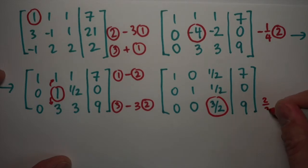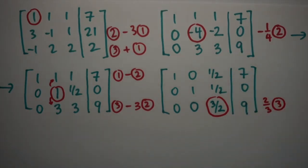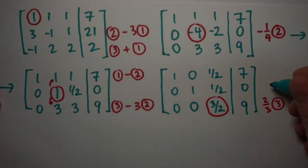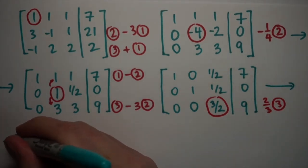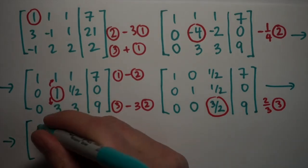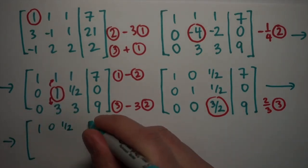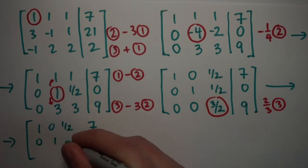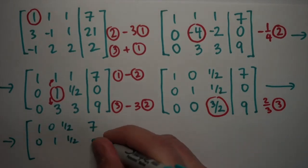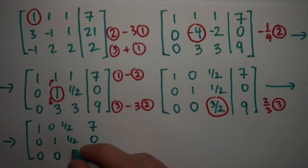Next step is to use this number here, the three halves, and get rid of the things above it. And that will again be easiest if this is a one. So I multiply row three by two thirds, the reciprocal of three halves, and change it into a one. If I do that, my first two rows remain unchanged. And then the last row is going to become zero, zero, one. And then nine times two thirds is eighteen thirds, or six.